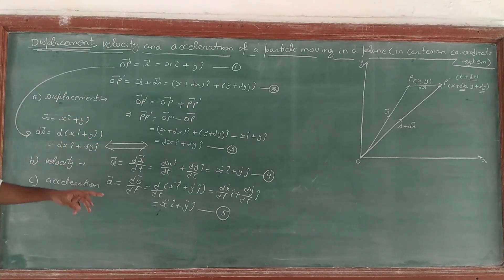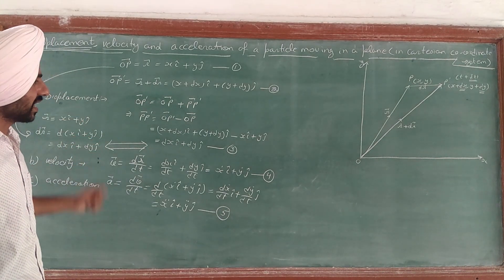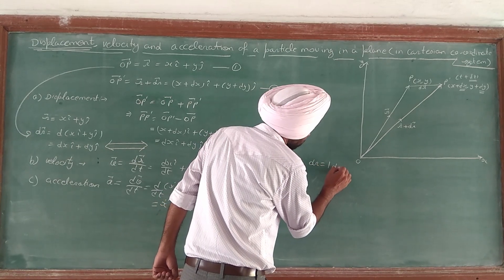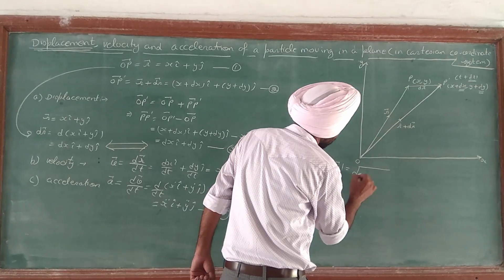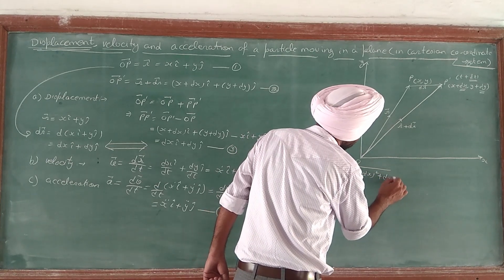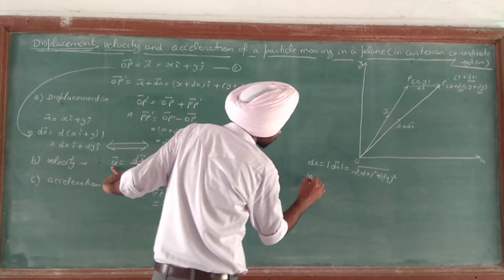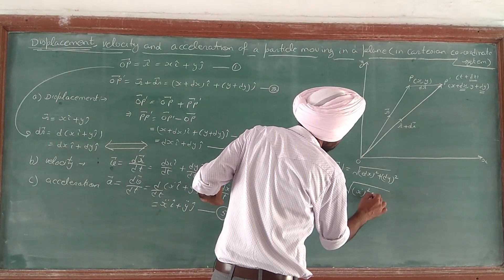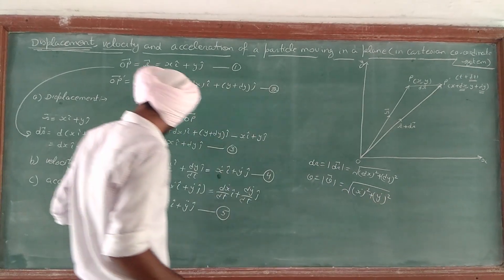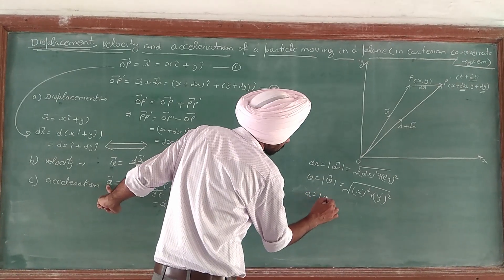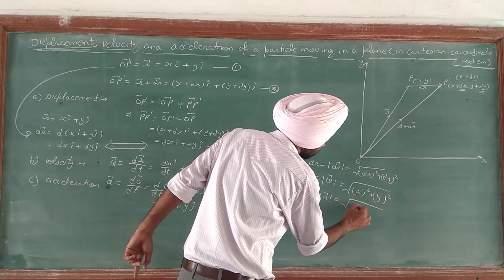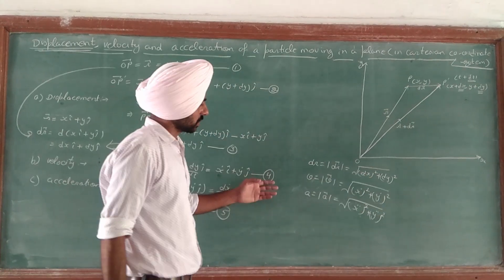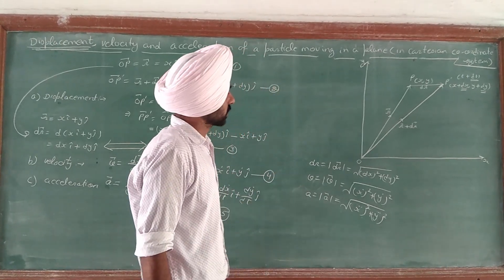These are the displacement, velocity and acceleration of a particle moving in a plane in the Cartesian coordinate system. The magnitude of displacement dr is the square root of (dx² + dy²). Similarly, the magnitude of velocity is the square root of (ẋ² + ẏ²). And the magnitude of acceleration is the square root of (ẍ² + ÿ²). So these are the displacement, velocity and acceleration expressed in terms of magnitude.